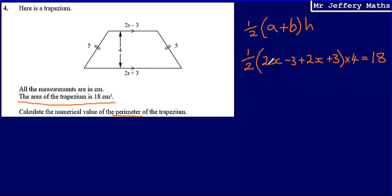What I can see is this is going to give me 2x plus 2x, which is 4x, and then negative 3 plus 3. Well, they are going to cancel each other out.